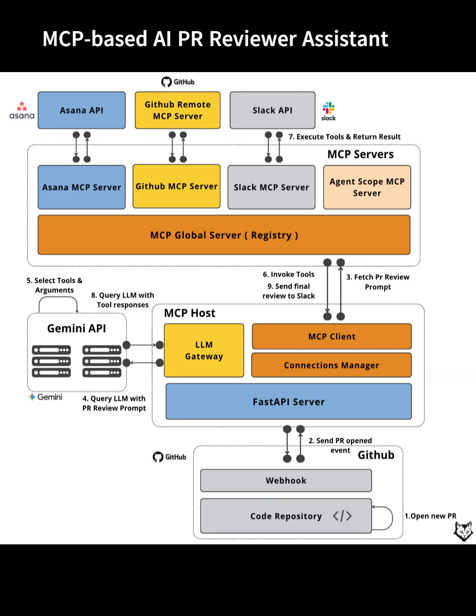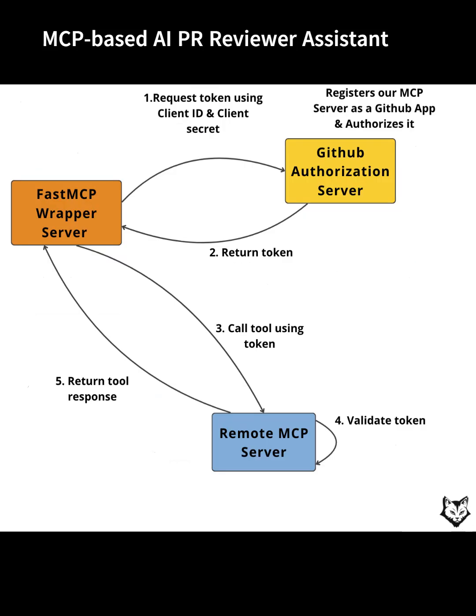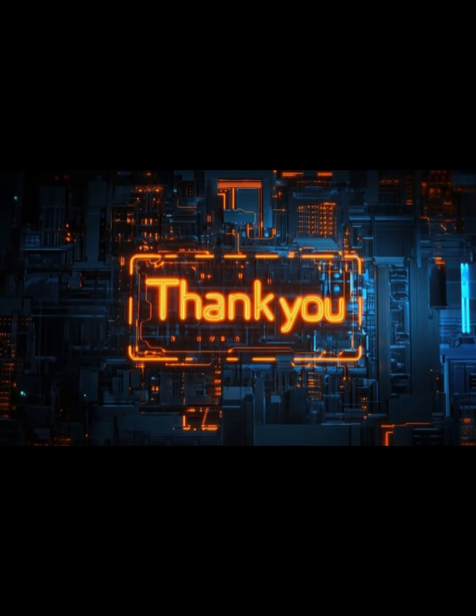Key benefits: Modularity allows rapid evolution and easy addition of new workflows or integrations. Observability via OPIC makes debugging, monitoring, and auditing straightforward. Centralized registry removes hard-coded dependencies, enabling scalable orchestration of workflow actions across all tools. This enterprise architecture reflects real-world best practices for building automation agents that are robust, adaptable, and transparent across complex developer ecosystems.